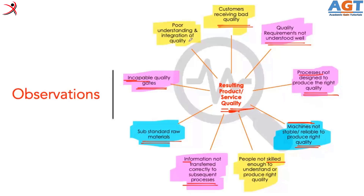Then there is poor understanding and integration of quality — meaning the whole business and all processes do not understand quality as a whole. They are just focusing on product quality and forgetting all other aspects. If you remember the 4M framework — man, machine, method, material — you can go through these problem situations and clearly see that it is not always about product quality. Product quality is the result of the 4Ms.